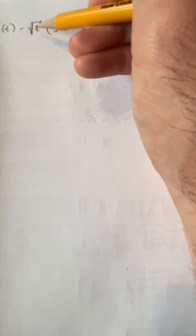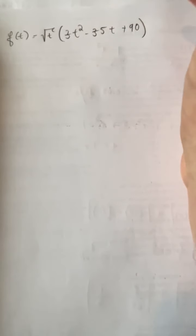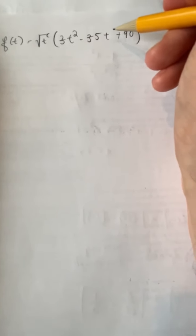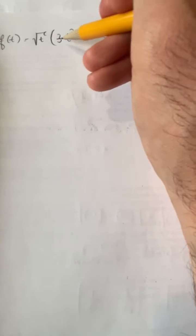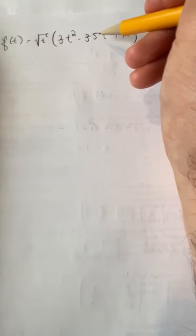We'll do the derivative of the first one — the derivative of square root of t, which is t to the one-half. You bring the one-half down, so it's one-half t to the negative one-half, or one over two radical t — either way is fine. And then the derivative of the quadratic, using the power rule, is going to be 6t minus 35.